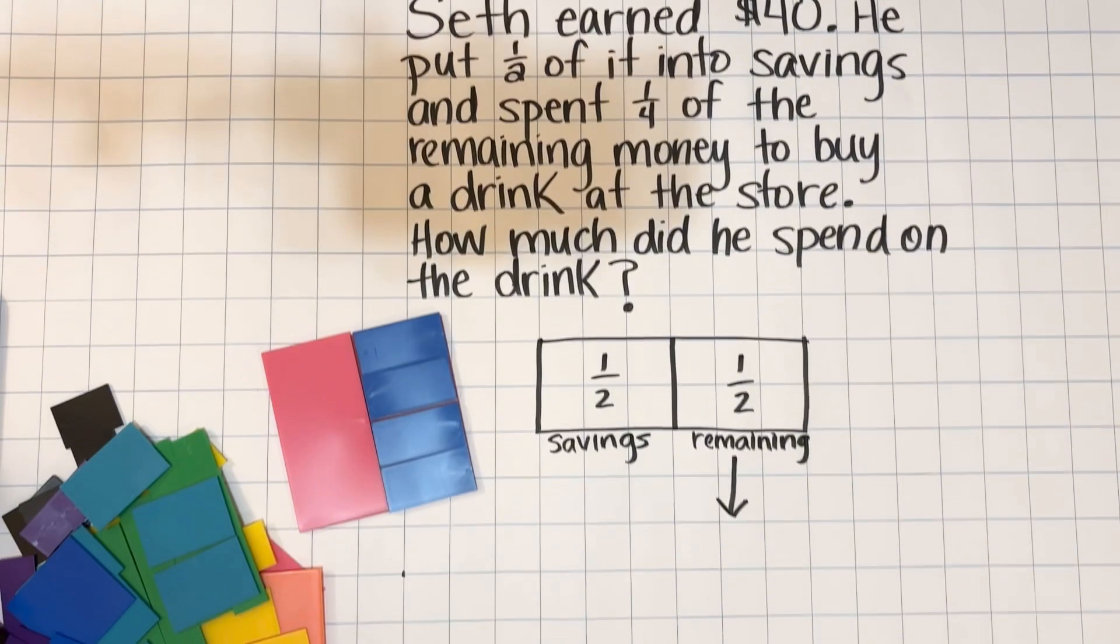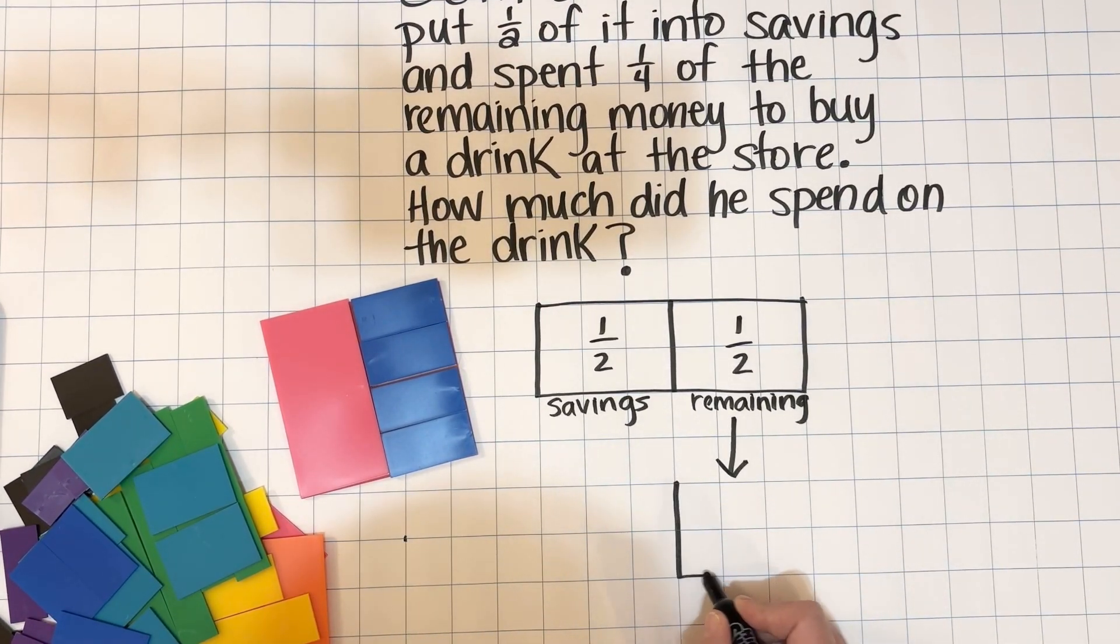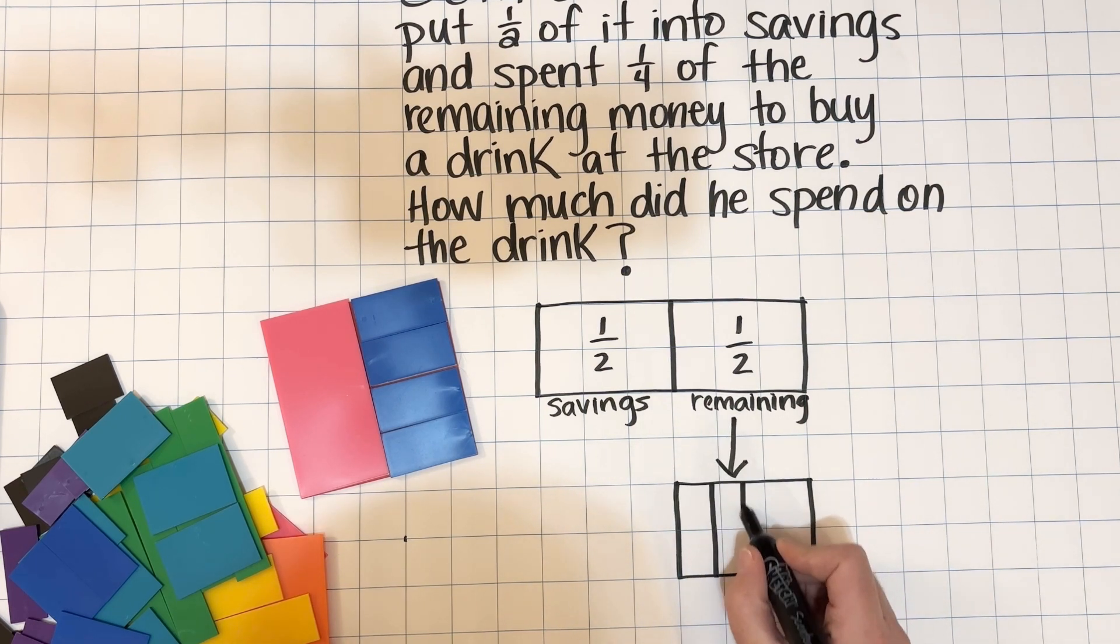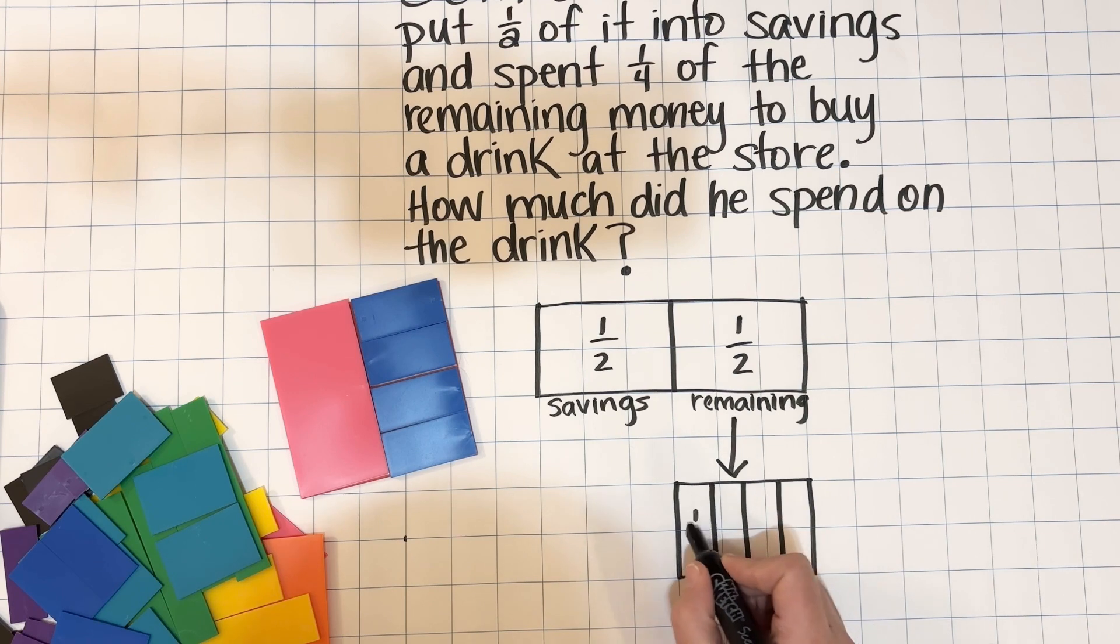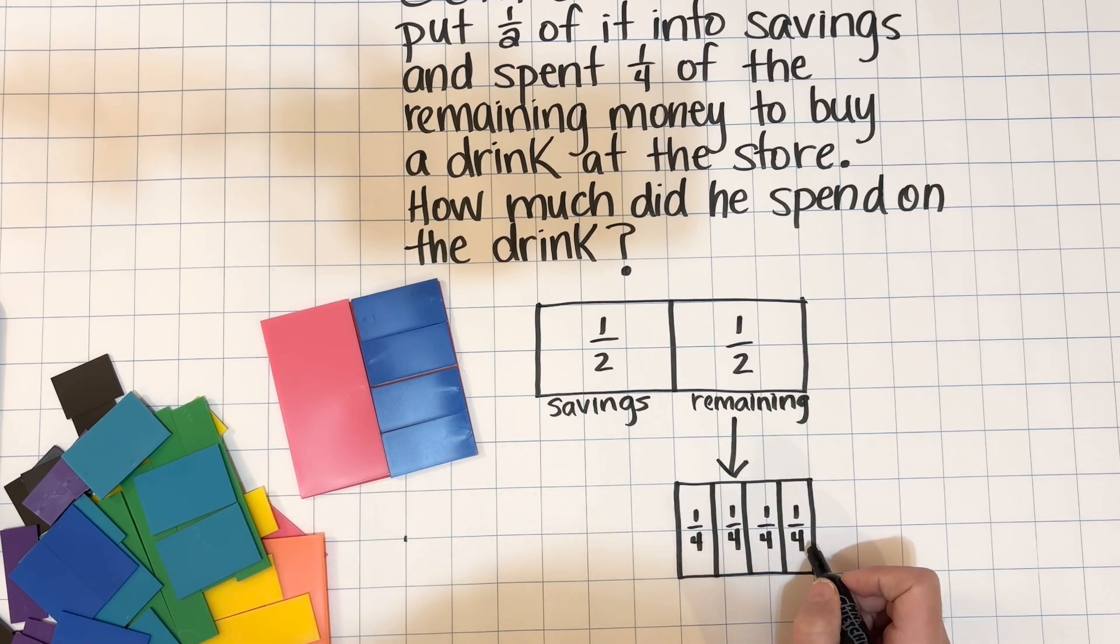Now here's the interesting part. We're going to take that one-half that's remaining, and that is going to become our new unit, our new whole. Now we're going to take that remainder and split it into four pieces, because we know that he spent one-fourth of the remaining money on his drink at the store.